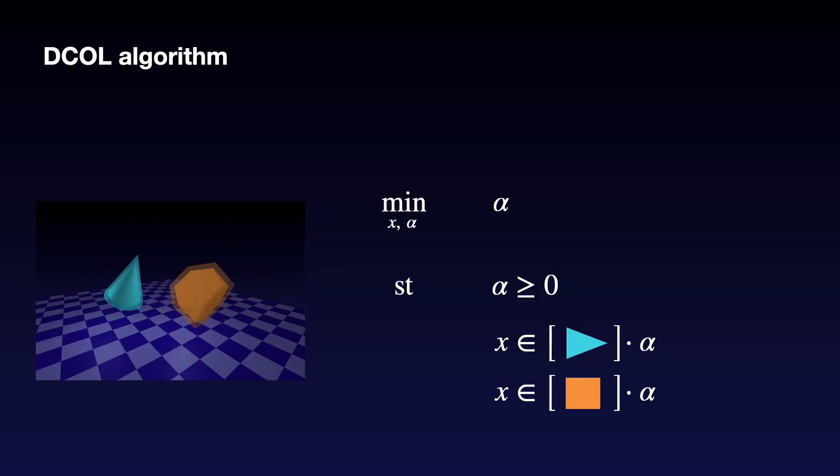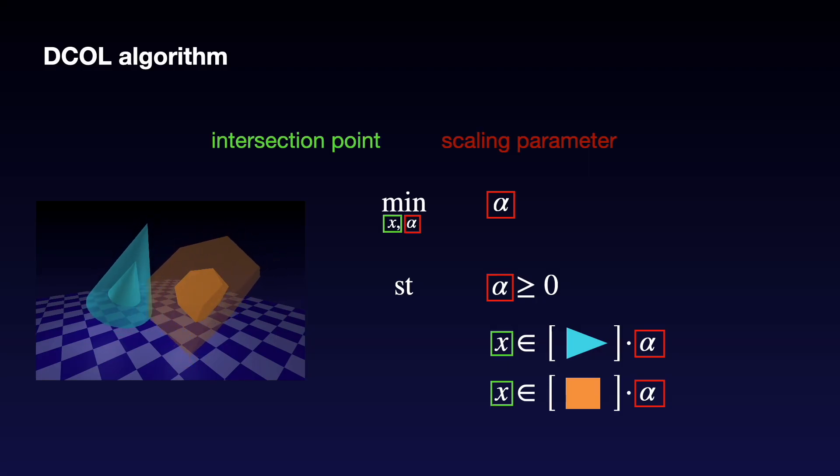A convex optimization problem is solved that finds the minimum uniform scaling alpha that is applied to each object before an intersection exists. This problem is guaranteed to be feasible, bounded, and can be differentiated with recent advances in differentiable convex optimization.